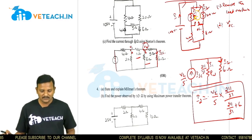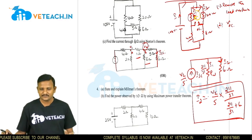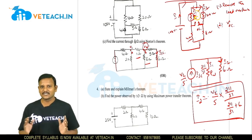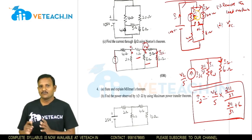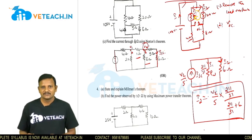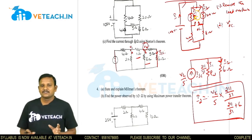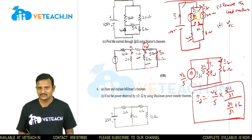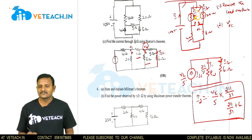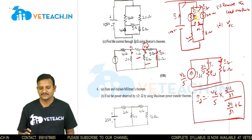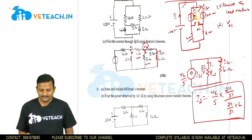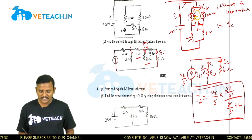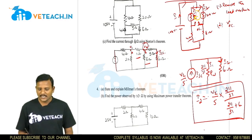The fourth question: state and explain Milliman's theorem. Milliman's theorem states that a number of voltage sources connected in parallel with resistances can be converted into a single equivalent voltage source in series with a single equivalent resistance.